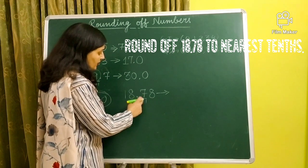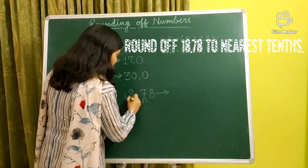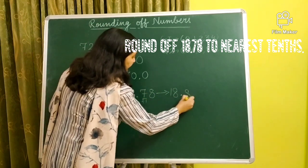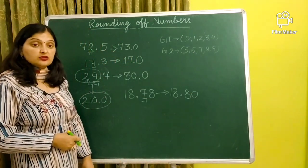So it means, what happened here, seven plus one? Eight. Left digits as it is, right digits, zeros. So here remained 18.7 plus one is eight. And then zero. So answer is 18.80.